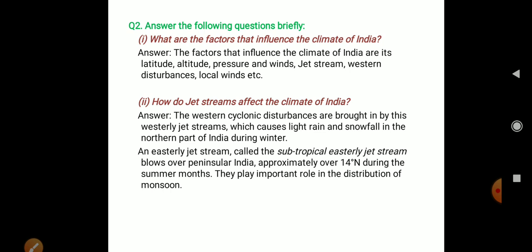The western cyclonic disturbances are brought in by these westerly jet streams, which causes light rain and snowfall in the northern part of India during winter. An easterly jet stream — the cold subtropical easterly jet stream — blows over peninsular India approximately over 14 degrees north during the summer months. They play an important role in the distribution of monsoon. Study material is available in PDF format on the Telegram and WhatsApp channels.